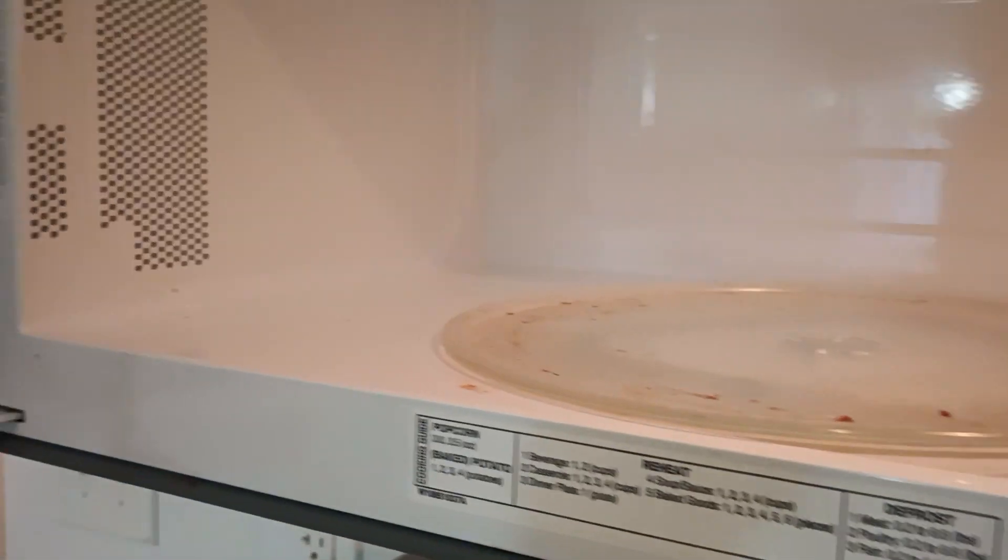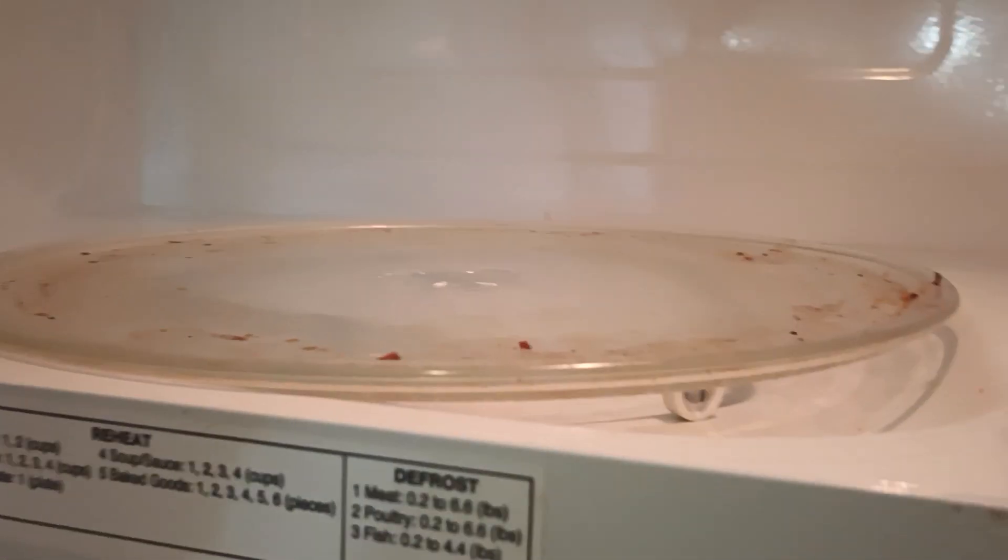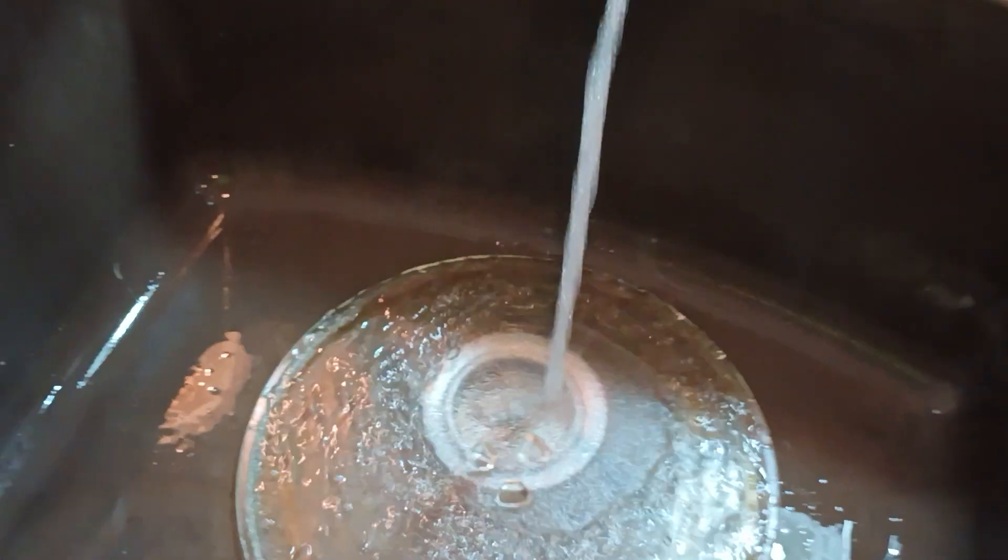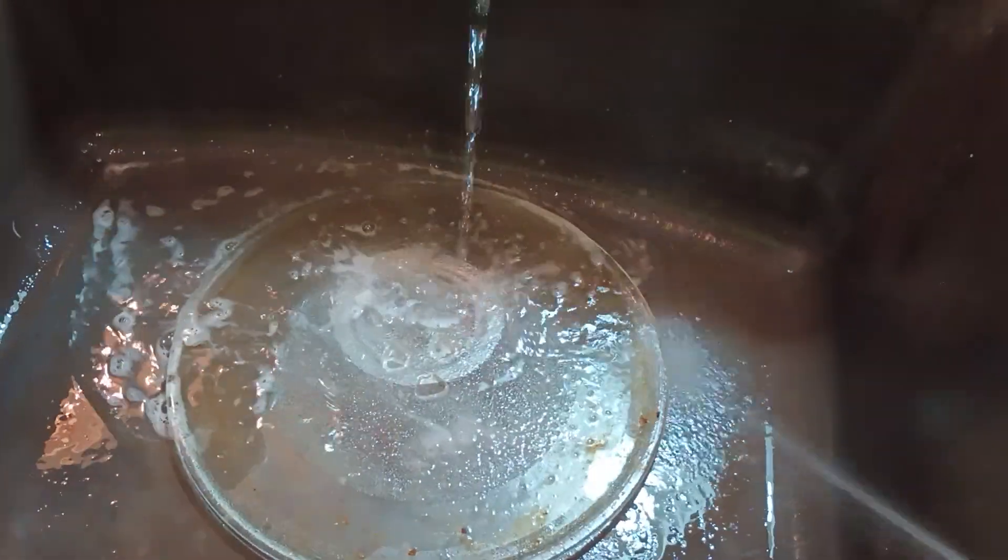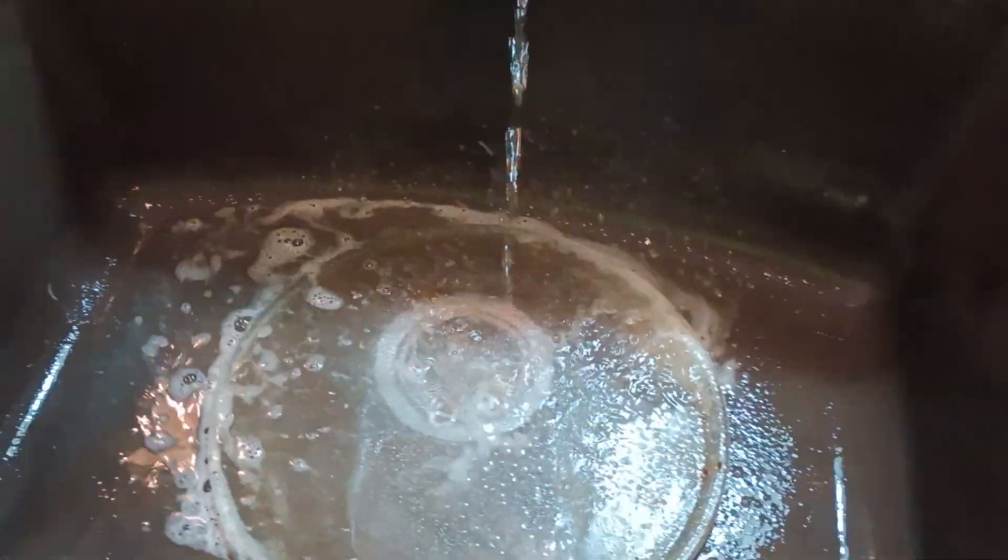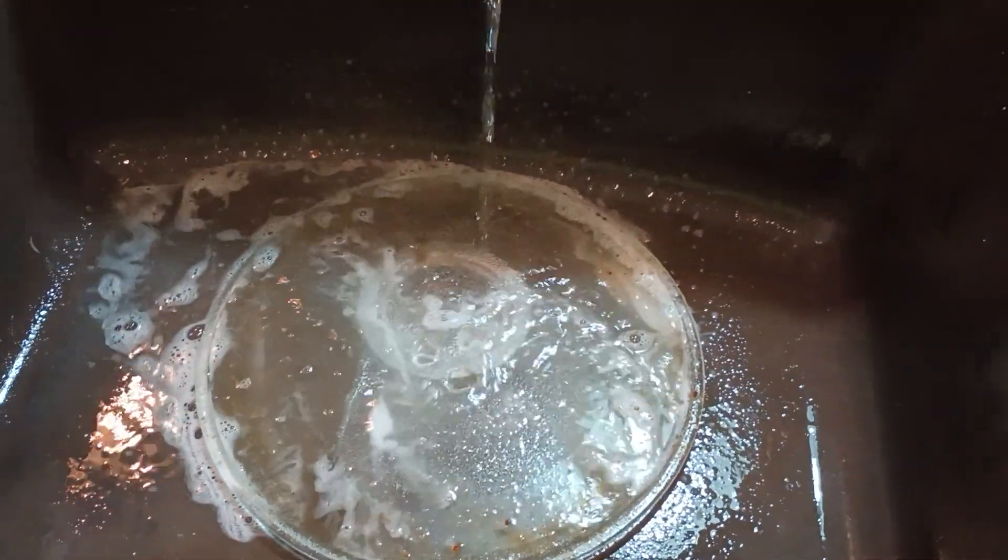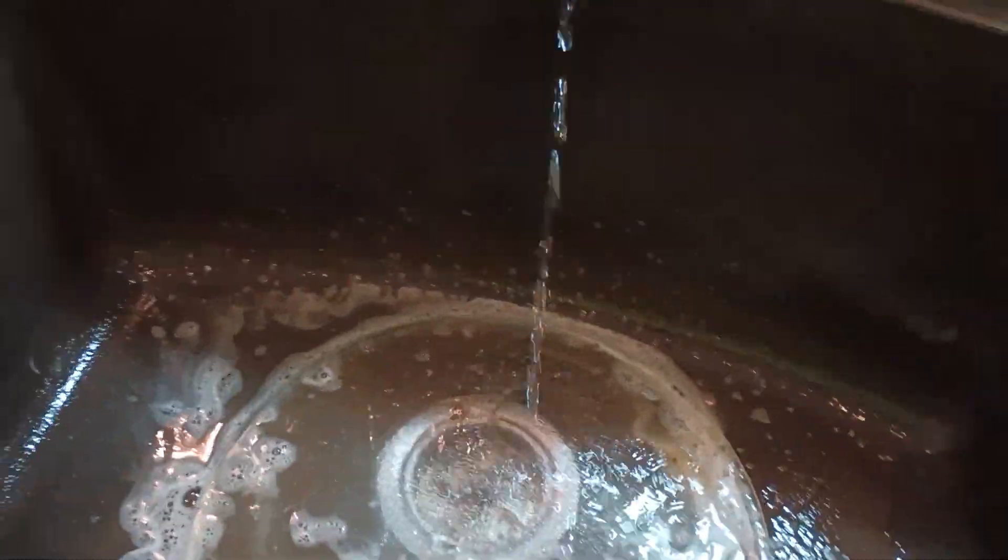So what you do is you will take out the tray, place it in the sink, run some water, and use your all-purpose cleanser. Just spray it, let the water soak around it and on top of it, and then you go back to the microwave.